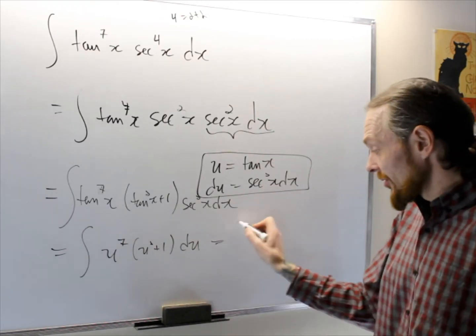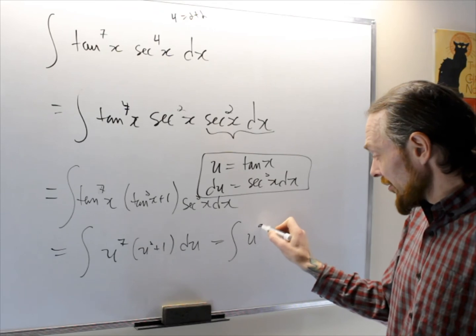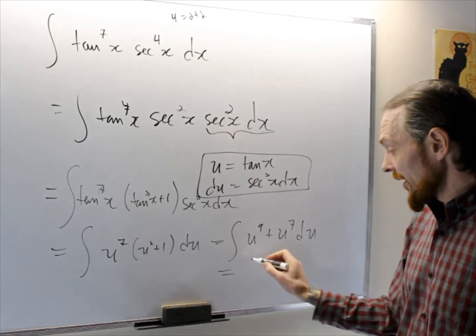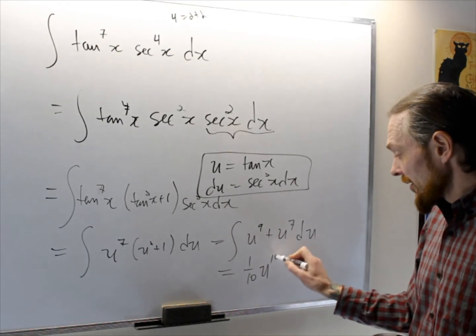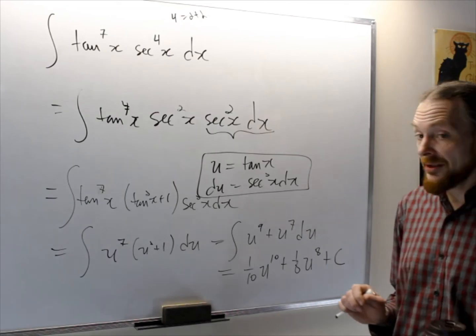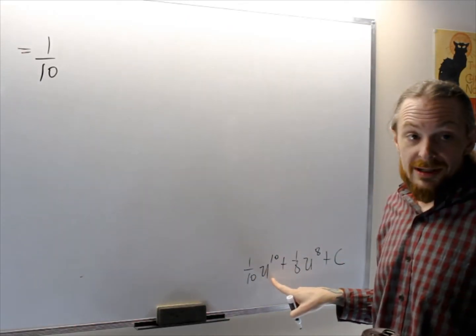Once we have this, it's the power rule. So I read it as integral u to the nine plus u to the seven du. We use the power rule and we get one over ten u to the ten plus one over eight u to the eight plus the constant of integration.